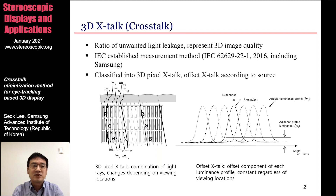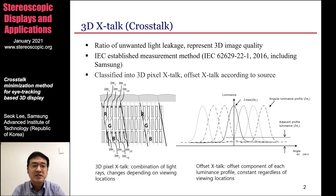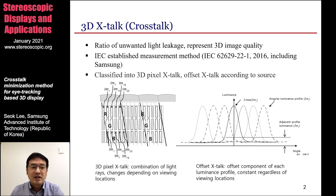IEC established the 3D crosstalk measurement method, and in this method, the 3D crosstalk is classified into 3D pixel crosstalk and offset crosstalk. The first one, the 3D pixel crosstalk, is generated from the combination of the light rays through the optical layer, such as the lenticular lens, and it changes depending on the viewing locations. The second one, the offset crosstalk, is generated from the offset components of each luminous profile, and it is constant regardless of the viewing locations.